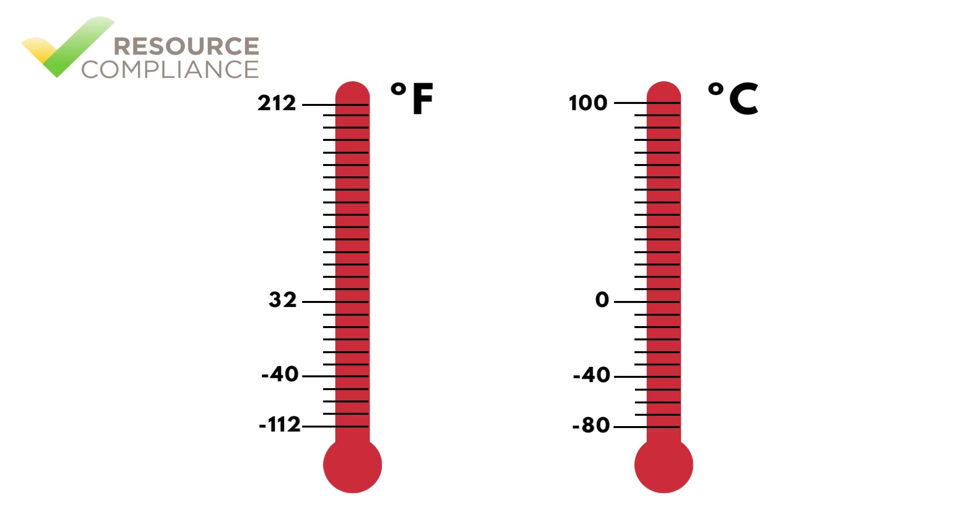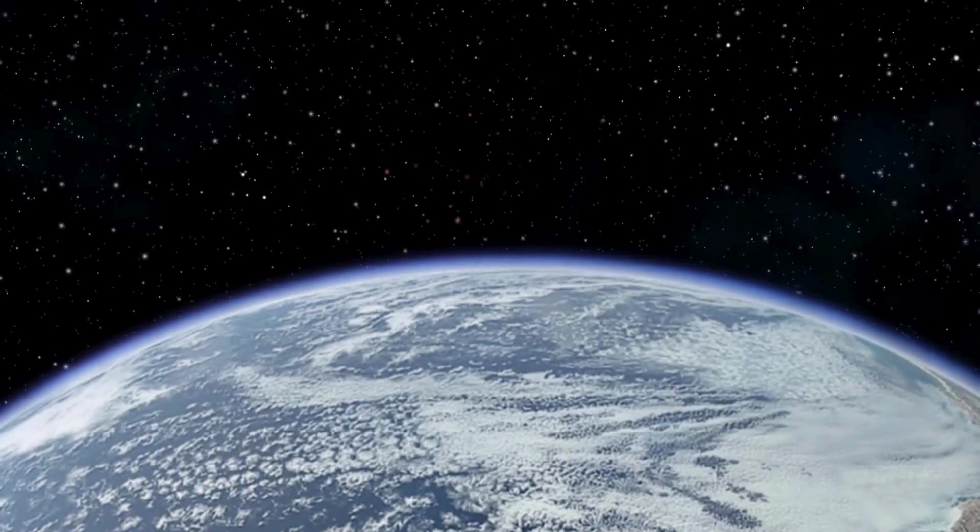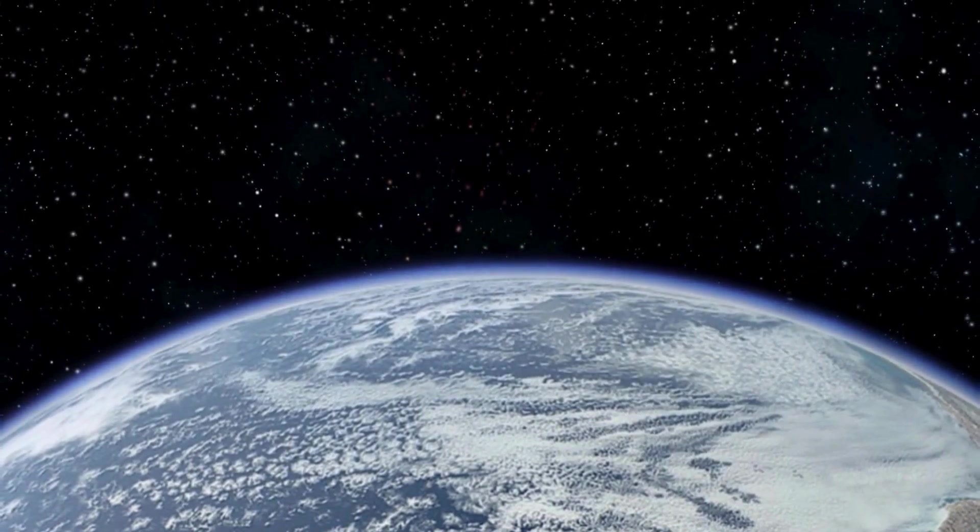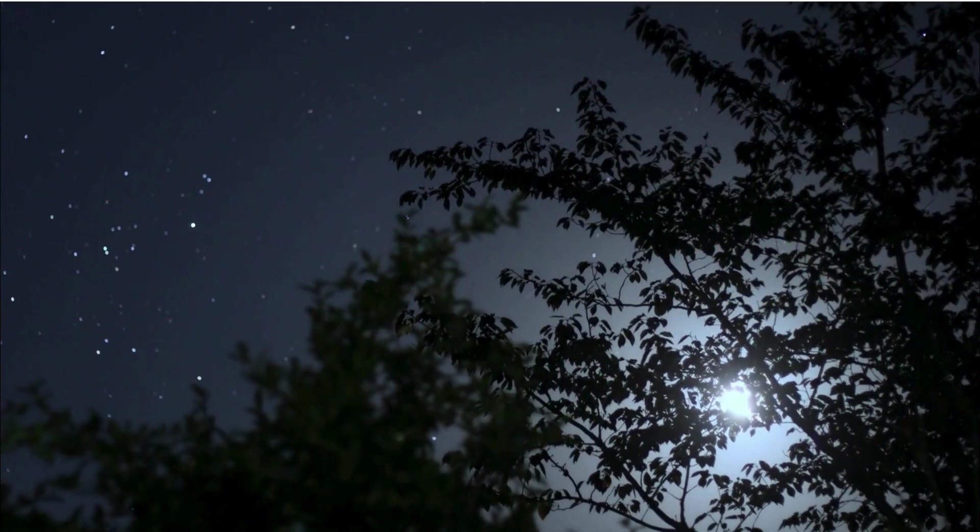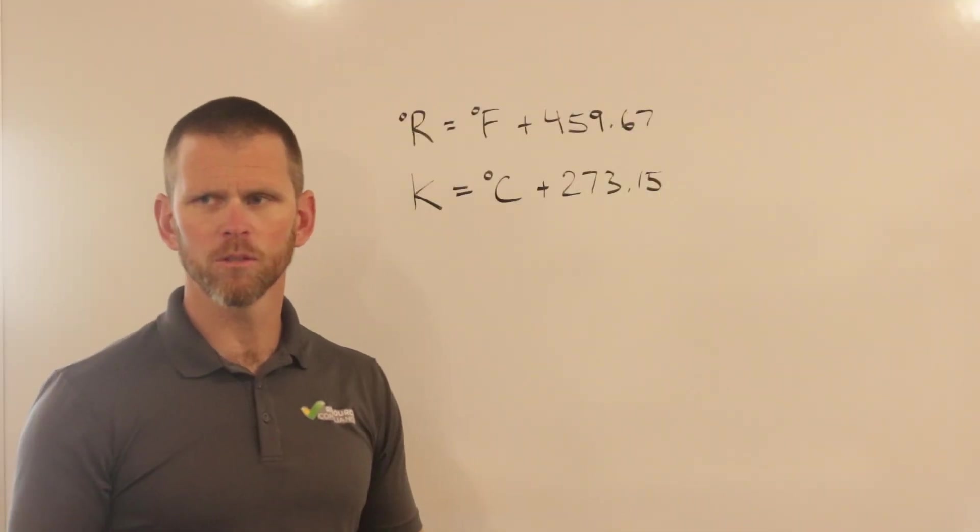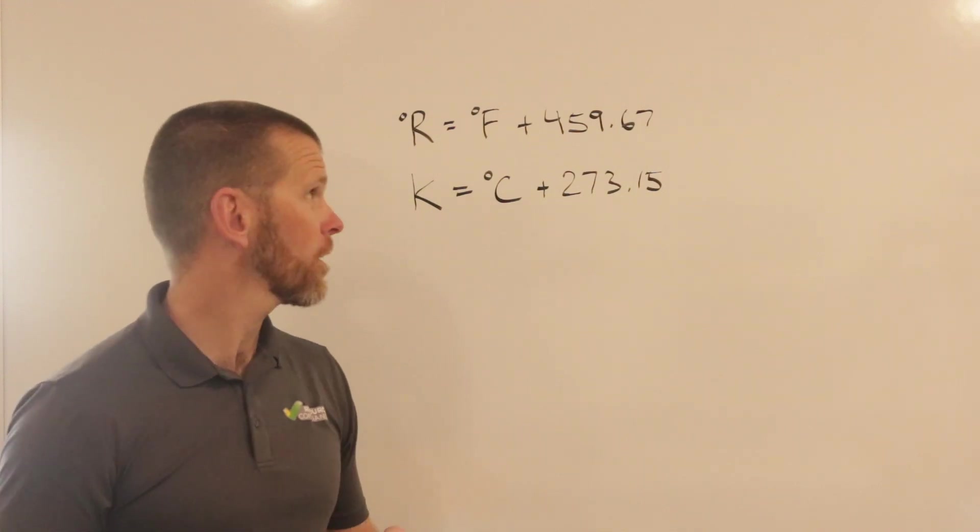When the temperature drops below negative 40 degrees, the Celsius scale has higher values than the Fahrenheit scale. Both the Fahrenheit and Celsius scales are relative temperature scales, meaning that they do not measure from absolute zero. Both scales, however, have a counterpart unit that is measured from absolute zero.